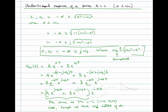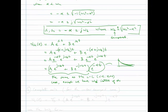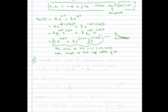So the math corroborates what we had postulated. We're now ready for the complete solution for the underdamped case: V_C(t) = V_S + [A·e^(j·omega_D·t) + B·e^(-j·omega_D·t)]·e^(-alpha·t).